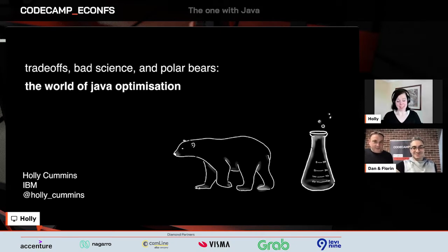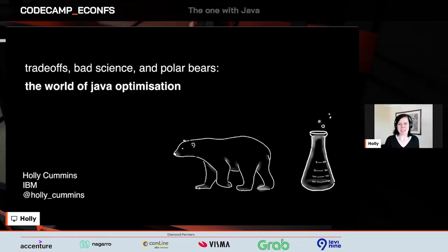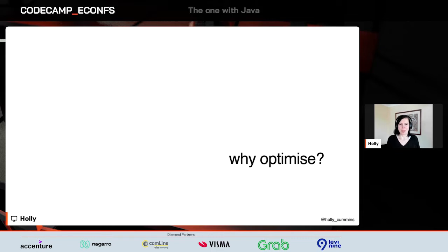I want to talk about performance and Java optimization. It's one of those topics that you can go deeper and deeper into, but I think all of us need to have at least some understanding of it. The first question is: why is this even interesting? Why would any of us care about performance? Why would we ever want to optimize?